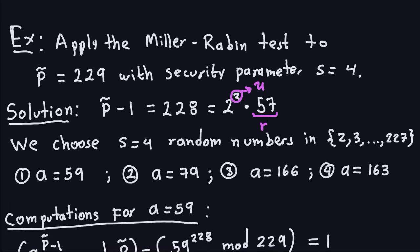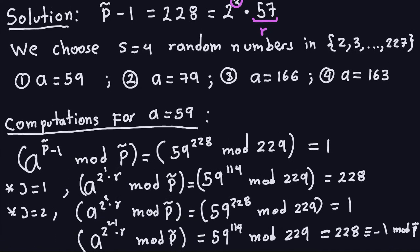You want to factor 228 in a way which is a power of 2 times an odd number. You could factor this number further, but it's not necessary — don't do it because it's going to slow down your process. So 228 is 2 squared times 57. In this case, the exponent is the variable u (=2) and 57 is the variable r. The security parameter is the number of random numbers we're going to choose from 2 to 227 — that is, from 2 to p̂ minus 2. So we're going to choose 4 random numbers: 59, 79, 166, and 163.